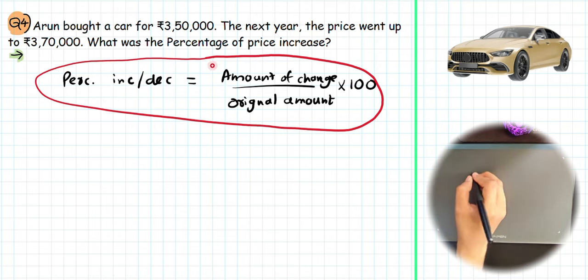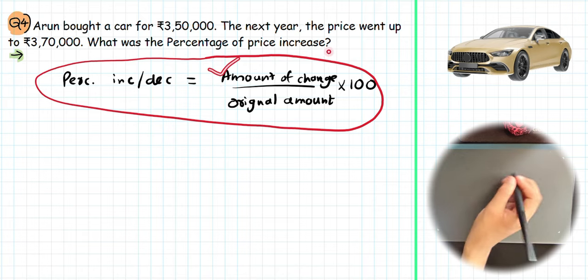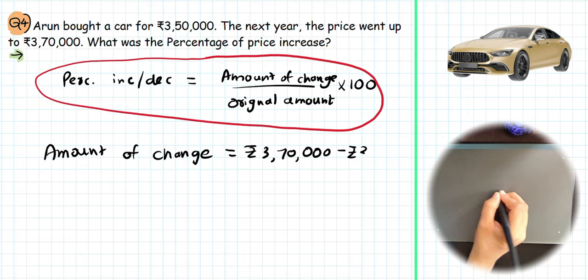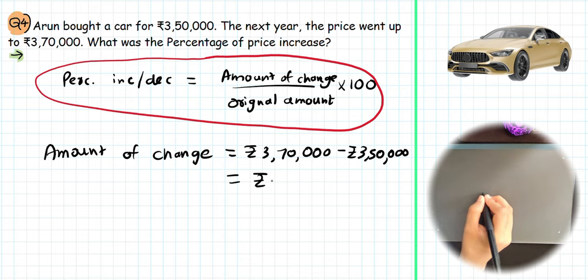For this equation, we will find out the unknown values. So we will find out the amount of change. The amount of change equals the increased price ₹3,70,000 minus ₹3,50,000. After subtracting, we get ₹20,000.